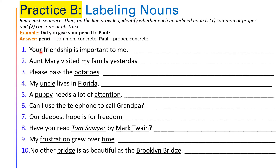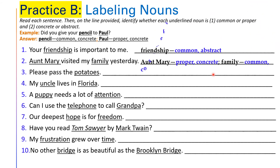Let's do the first sentence together: 'Your friendship is important to me.' The word is friendship. Is it common or proper? It doesn't start with a capital letter, so it is common. Also, friendship is not something specific or particular — it's very general. And is it concrete or abstract? It is abstract, because we cannot touch friendship, we cannot see it, it is just an idea. Number two: 'Aunt Mary visited my family yesterday.' Aunt Mary — is it common or proper? It is proper, and concrete. Family is common and concrete.